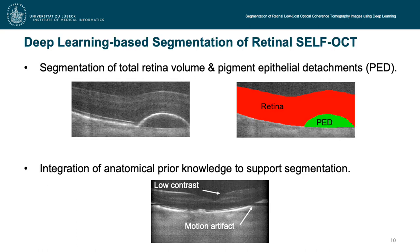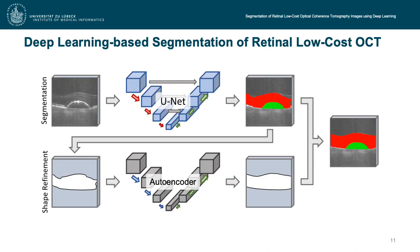For automatic evaluation of the SELF-OCT image data, we developed a deep learning-based segmentation algorithm. We segmented two structures: the total retina volume and the pigment epithelial detachments, called PED. Both are relevant OCT-based AMD biomarkers. Additionally, we integrated anatomical prior knowledge into the approach to make the segmentation more robust against artifacts. Our approach consists of two main components: segmentation and shape refinement. The SELF-OCT volume is pre-segmented by a U-Net, whose segmentation is then binarized and transferred to an autoencoder, which performs shape refinement to correct possible segmentation errors caused by image artifacts.